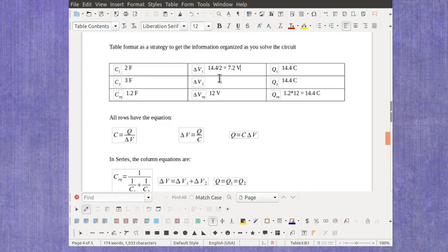And if I do the same thing on the second row, 14.4 divided by 3 gives me 4.8. And as a check, you should make sure that the 7.2 and the 4.8 actually do add up to give me my 12 volts.